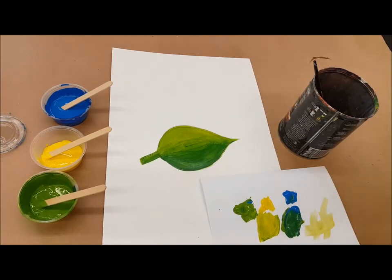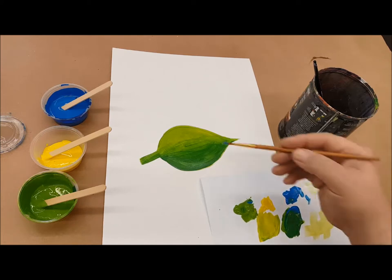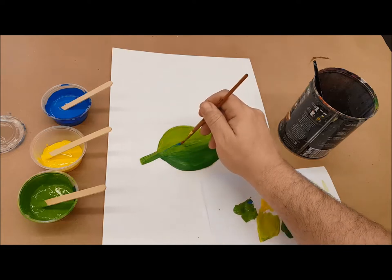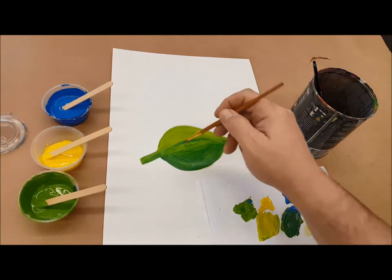So if I want to put a little texture in my leaf, like some veins, go ahead. And this time I'm just going to use blue. I can go ahead and put a vein going down the leaf.